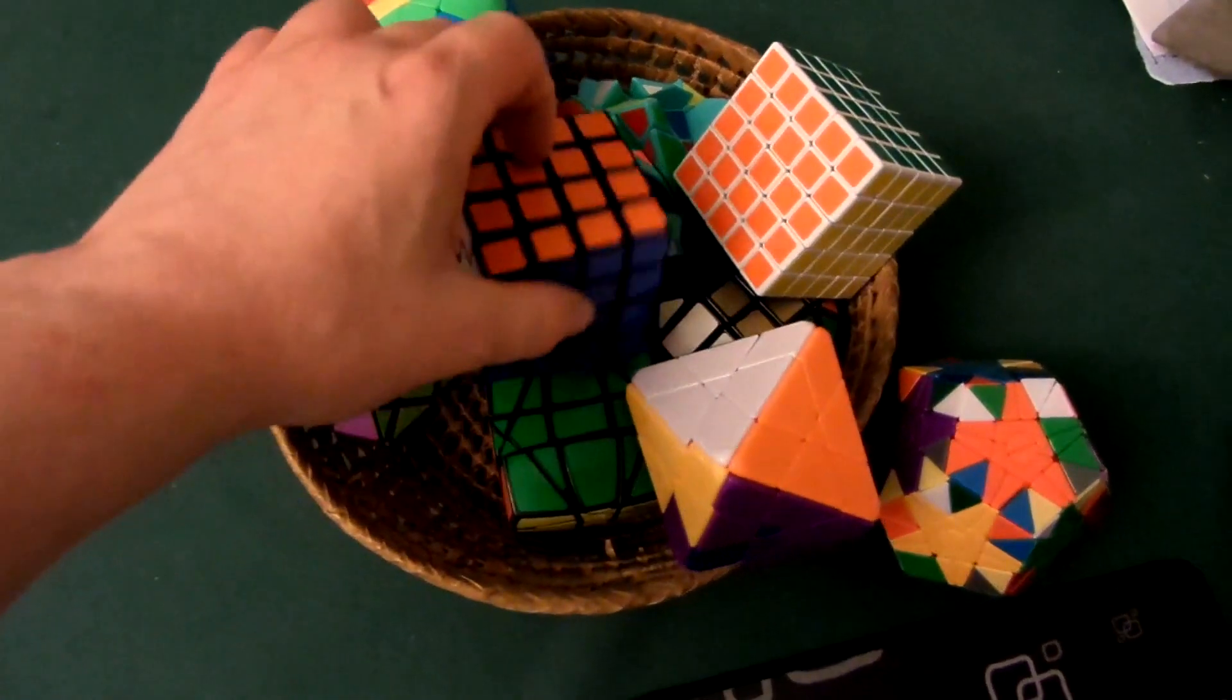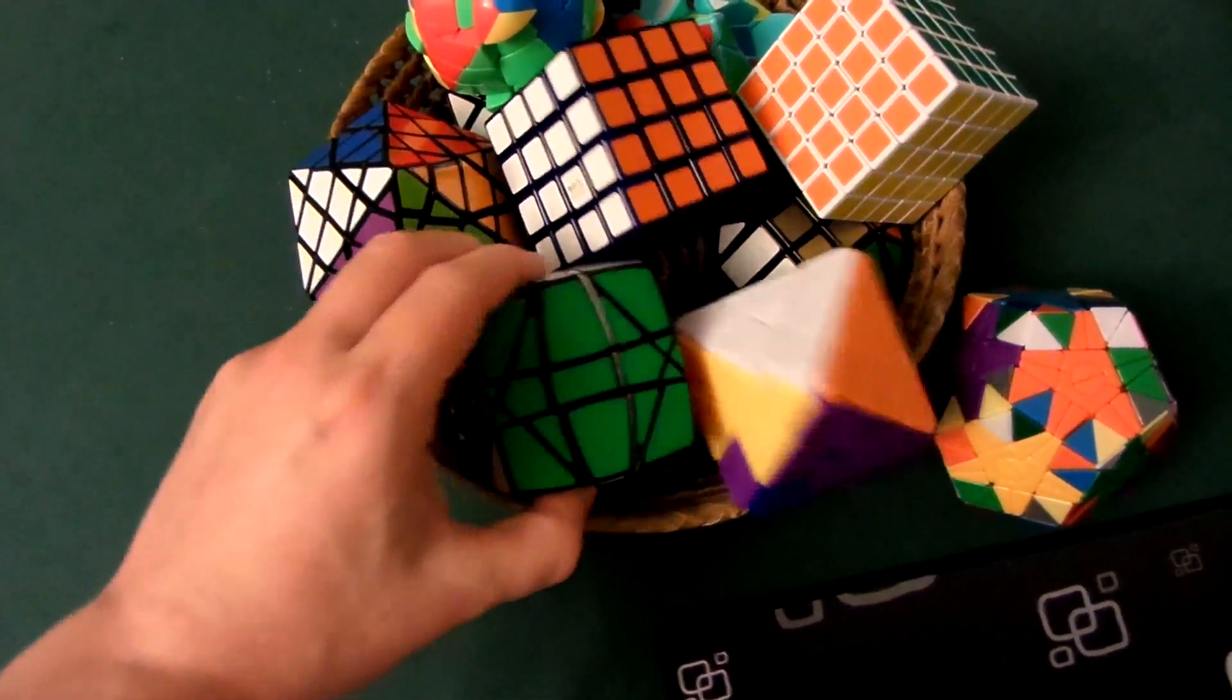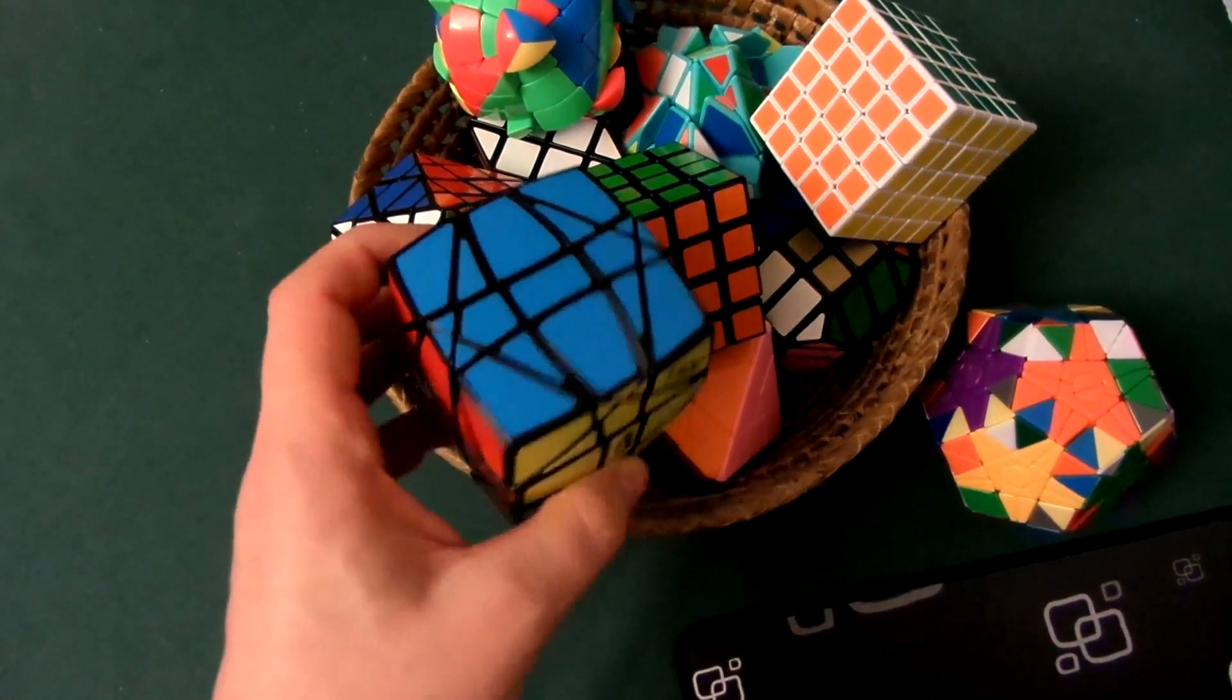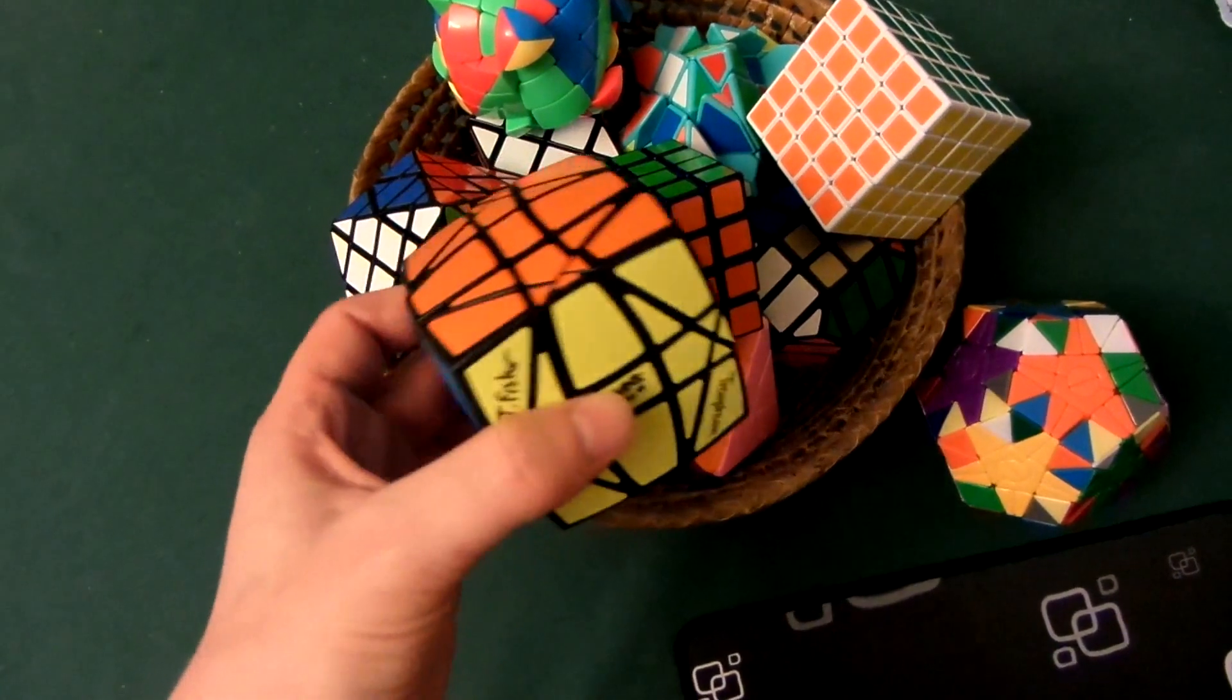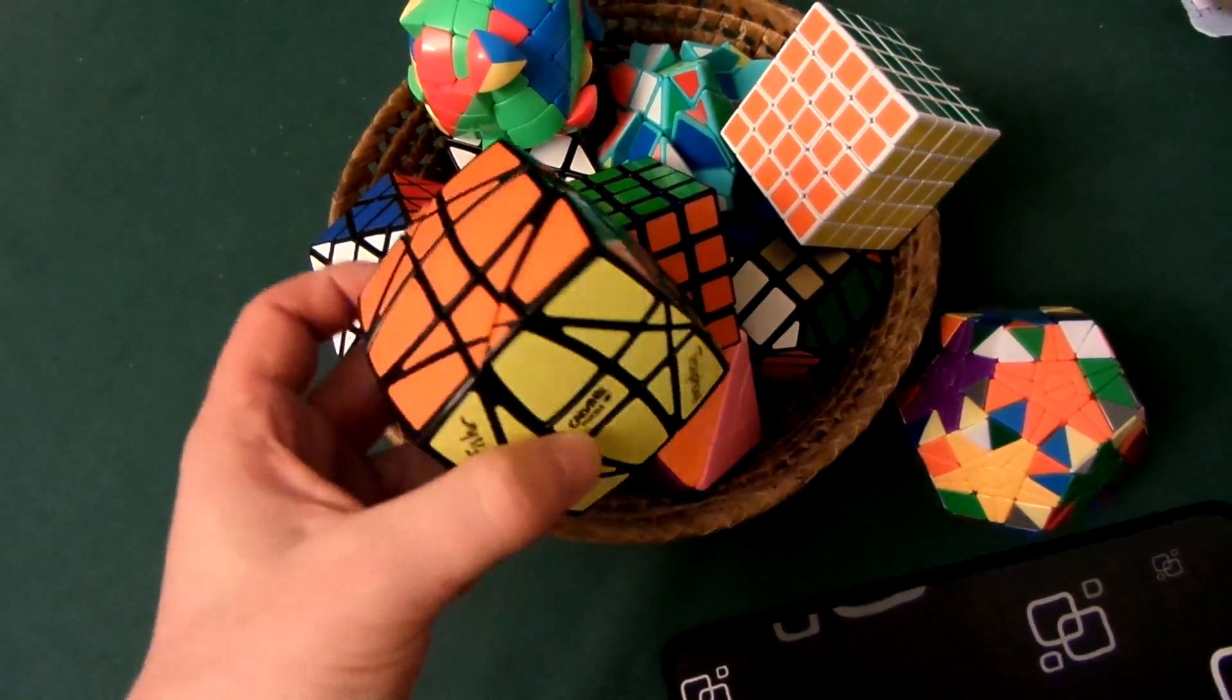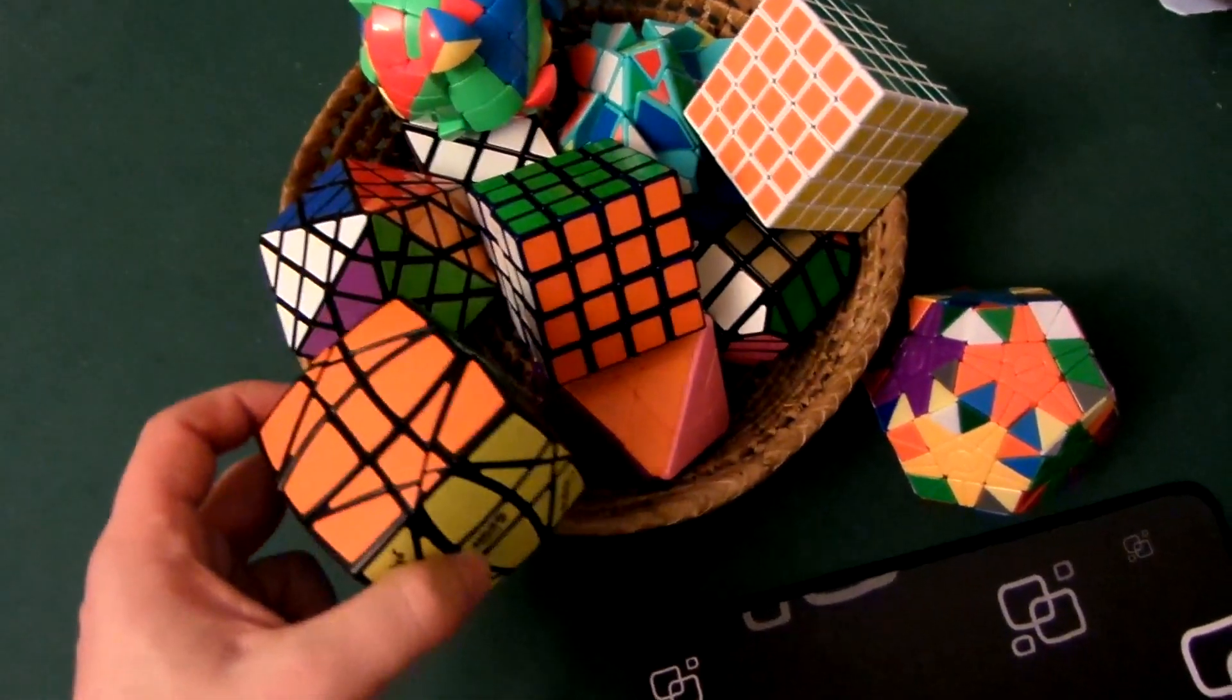And yeah, while I was looking for 4x4 shape mods in the tub that I store my puzzles in, I spotted the Hexaminx, which is a megaminx shape mod. And I thought, you know something, I wouldn't actually mind solving this again because it's a really fun puzzle. It's probably one of my most favorite shape mods. It's basically a megaminx that's been turned into a cube.